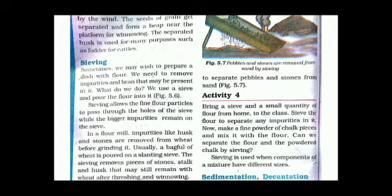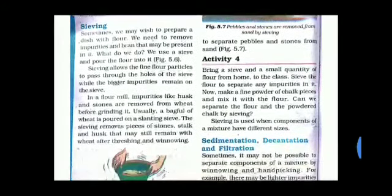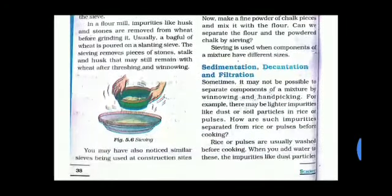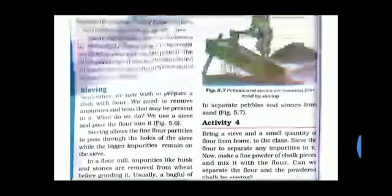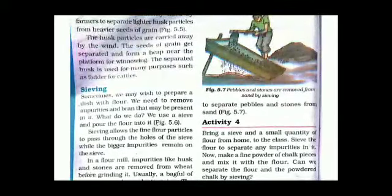The sieve allows the fine flour particles to pass through the holes of the sieve while the bigger impurities remain on the sieve. In the flour mill, impurities like husk and stone are removed from the wheat before grinding it. Sieving is also used at construction sites. It is a very useful and practical method of separation.